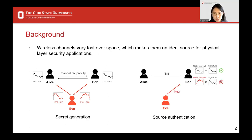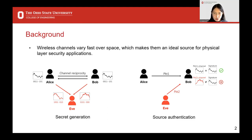Another example is source authentication protocols. In a source authentication protocol, Bob wants to know whether a received packet is from the legitimate transmitter Alice or not. With wireless channels as a feature, Bob can measure the channel of a new packet, compare it with previously collected channel signatures, and only accept this packet if the new channel is close to the signatures. If the packet is from Eve, it is very likely to be rejected since Eve's channel can be very different from Alice's channel.